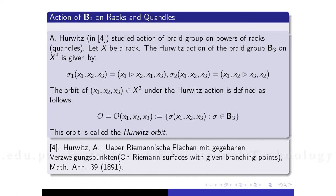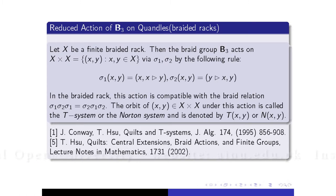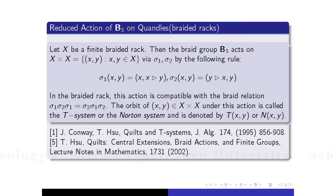Our research work is about how to reduce the action of B3 on racks. The action of B3 on X^3 is already defined by Hurwitz. What we have tried to define is the reduced action of B3 on X^2. This is the action of B3 on quandles satisfying two relations, and these two generators satisfy a braid relation. I have checked that this action is compatible with the braid relation. Orbits under this action are called T-systems or Norton systems, denoted N(X,Y) or T(X,Y).